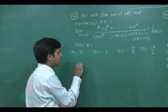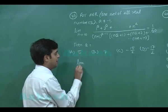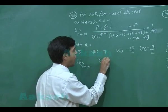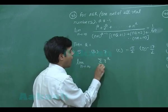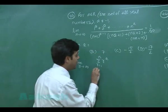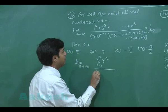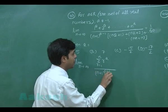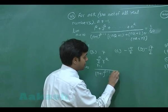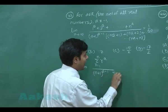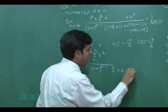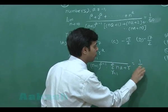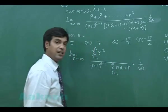We can start this question as: limit n approaching infinity, numerator is summation r to the power a where r is from 1 to n, divided by the denominator (n plus 1) raised to the power (a minus 1) multiplied with summation (n·a plus r) for r equals 1 to n, and this is equal to 1 by 60.